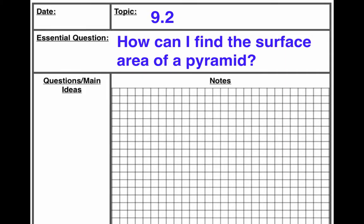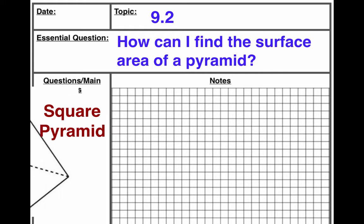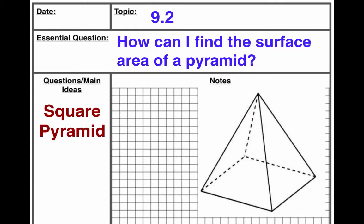So in our notebook, we're going to focus in this video on what's called a square pyramid. A square pyramid is one that looks like this. It has a base in the shape of a square - if you notice, if you look at the bottom of the pyramids, it's in the shape of a square.